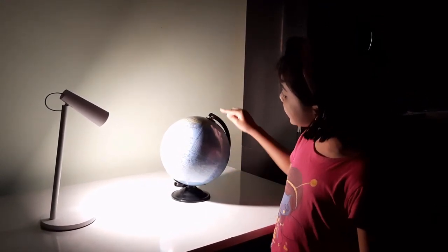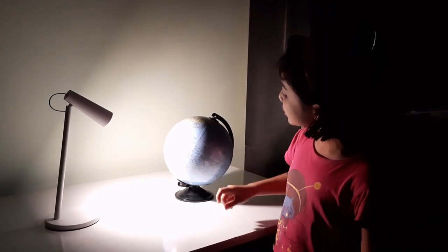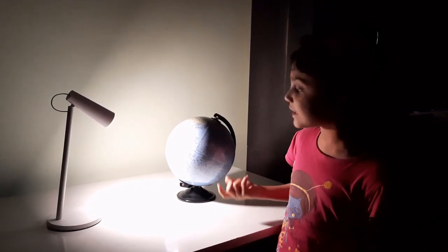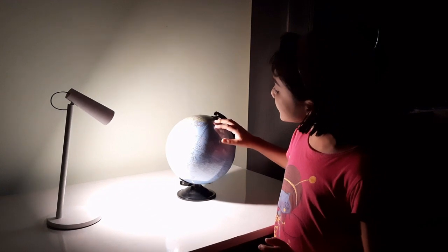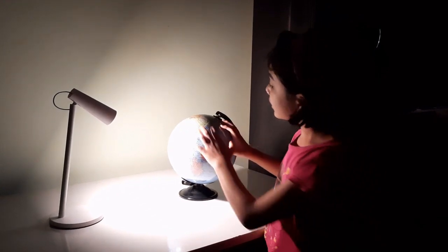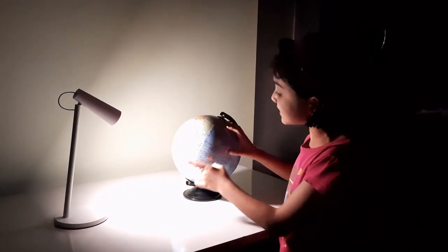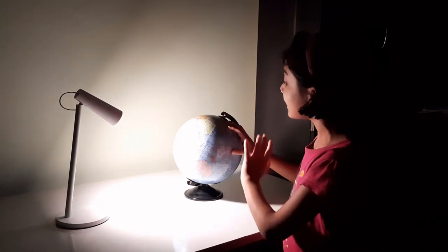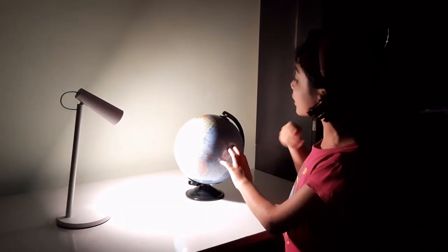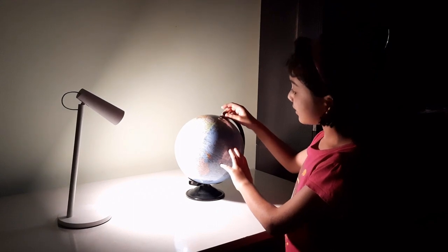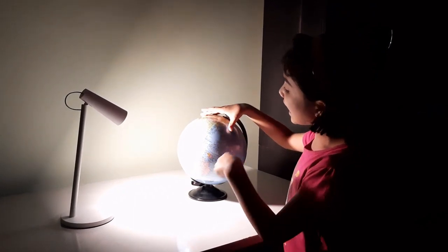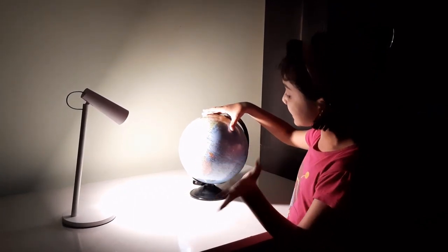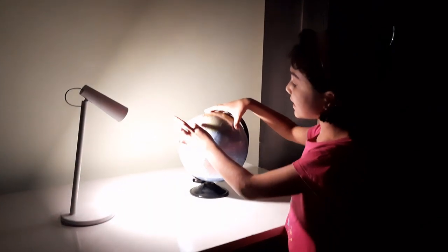This imaginary line is called the axis, on which the earth spins. The part which is facing the sun has day, and the part which does not face the sun has night. I am giving an example.